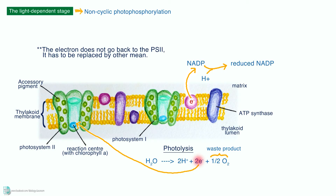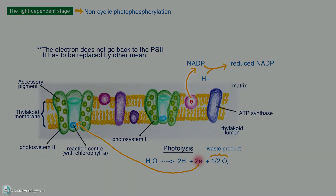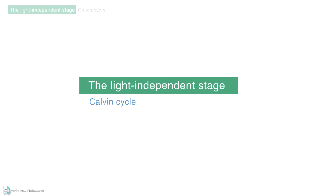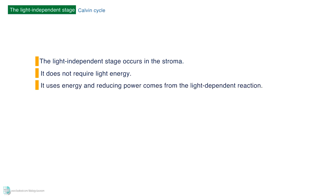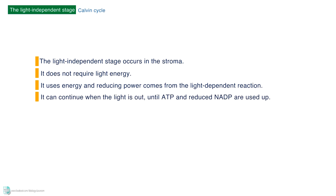The ATP and reduced NADP produced by the cyclic and non-cyclic photophosphorylation can now be used in the light-independent stage. The light-independent stage occurs in the stroma. It does not require light energy, but it uses energy and reducing power from the light-dependent reaction. It can continue when the light is out until ATP and reduced NADP are used up.